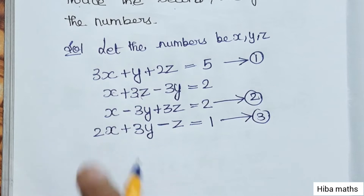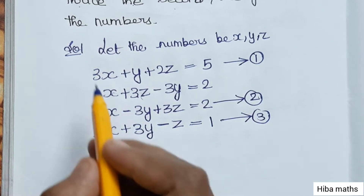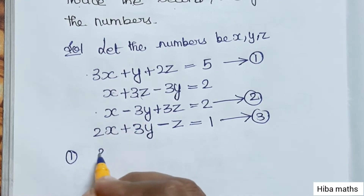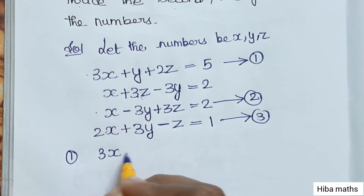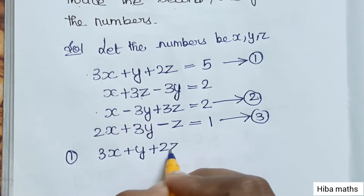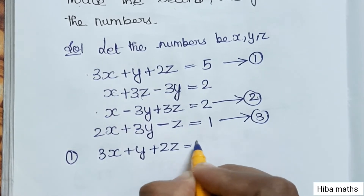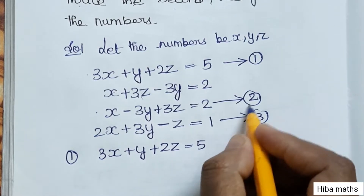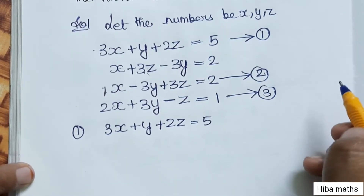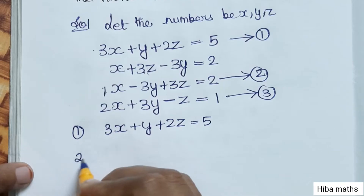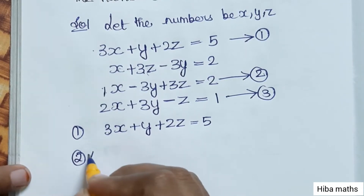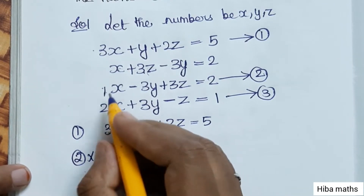We have formed three equations. The first equation is 3X + Y + 2Z = 5. The second equation is X - 3Y + 3Z = 2. Now we proceed to solve.